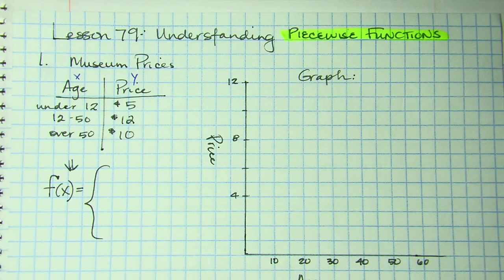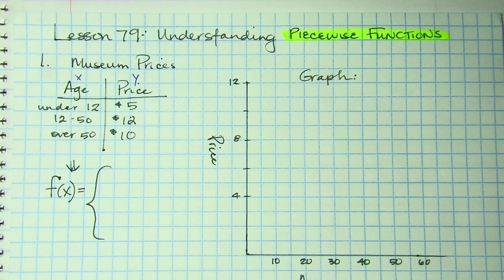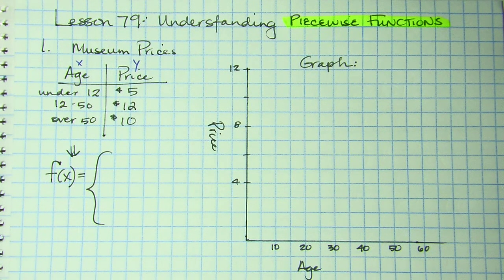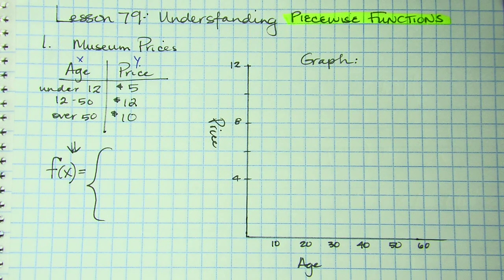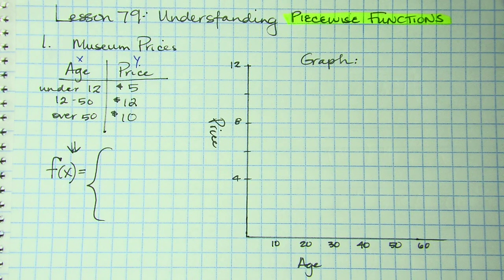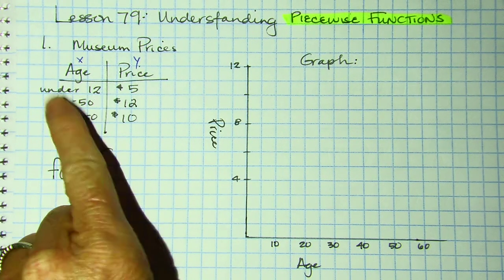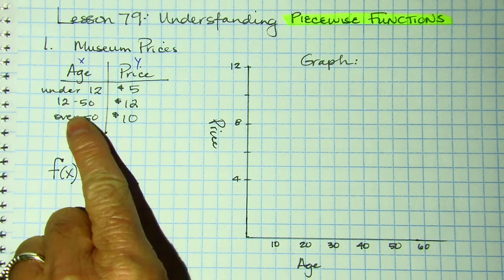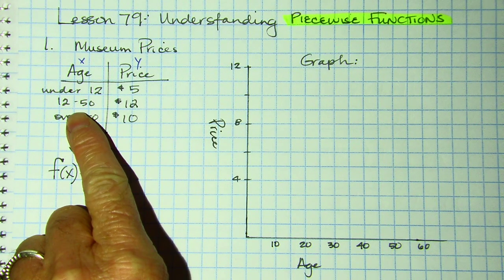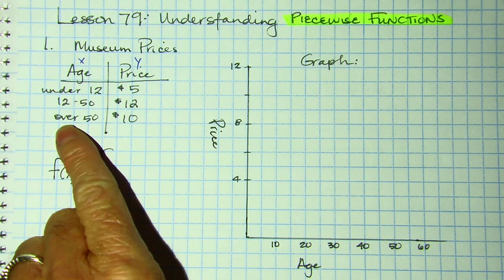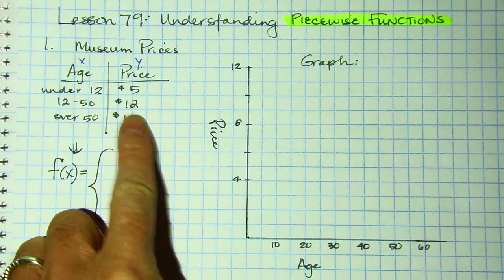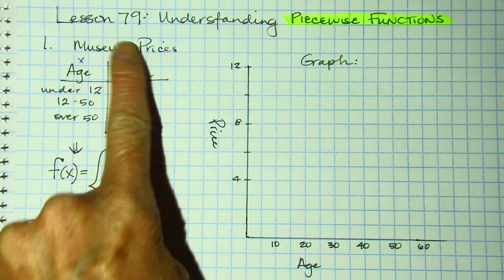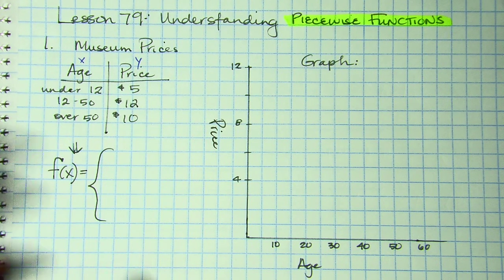I have recorded museum prices. Anytime we go to an amusement park, or the movies, or wherever you're going, there might be different prices for different ages, and it's a perfect example of a piecewise function. At this museum, if you're under the age of 12, you pay $5. If you're between 12 and 50, you pay $12. If you're over 50, you pay $10. I've marked the left as X and the right as Y, just like any standard table.